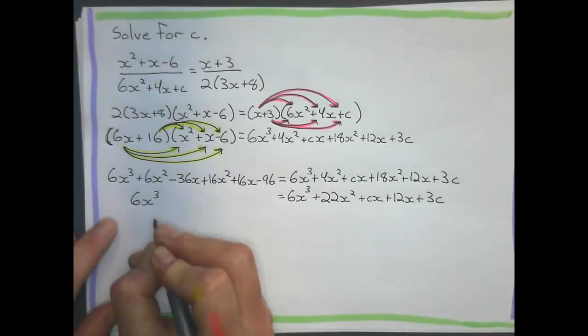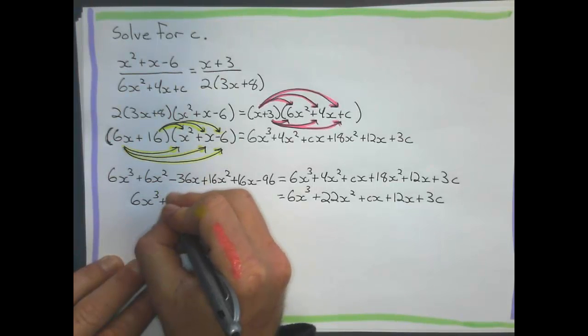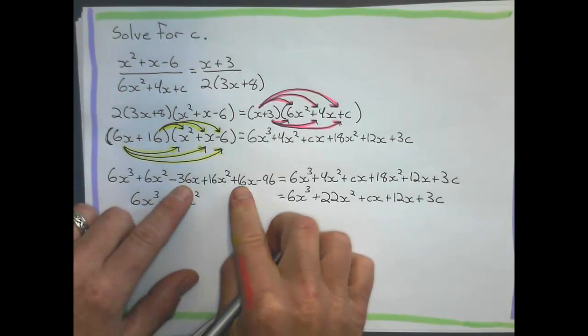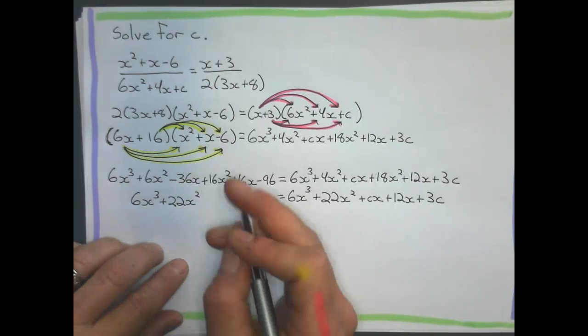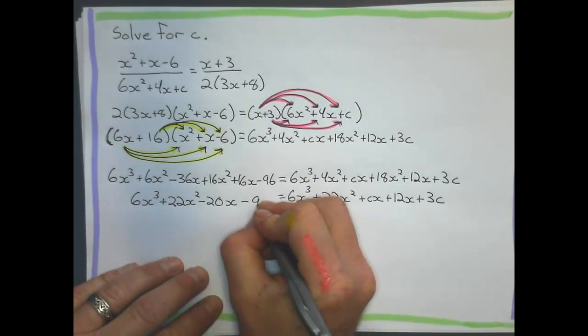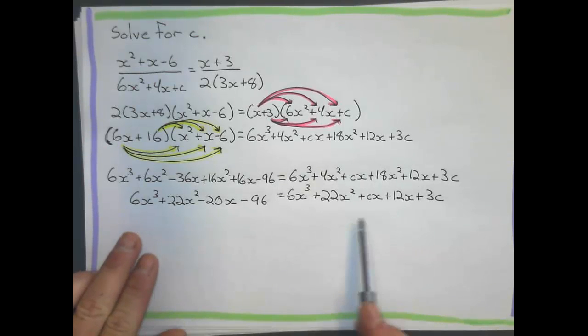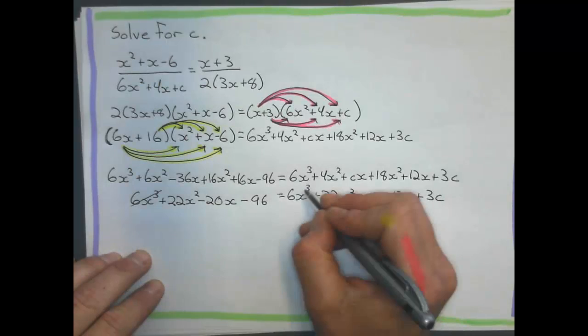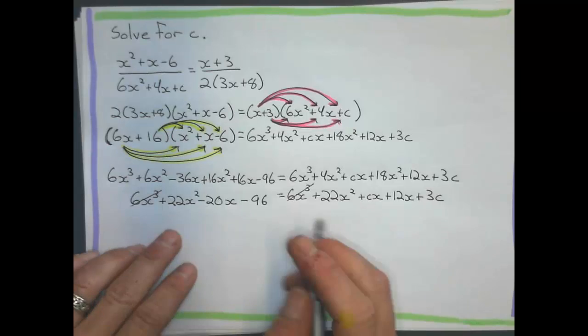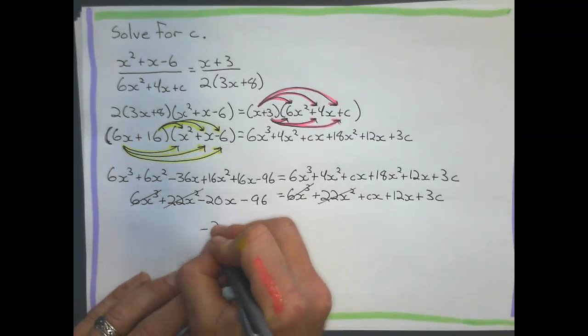So, we get 6x cubed. That doesn't have any like terms. 6x squared and 16x squared gives me positive 22x squared. Negative 36 plus 16, let's not make integer mistakes, that gives me negative 20x. And I think that negative 96 is just all by himself. Now, I look at this expression, this big long expression. And I go, oh, hey, wait. The 6x cubed and 6x cubed. I can subtract that from both sides of the equation. It also has another positive 22x squared and positive 22x squared. Suddenly, it becomes a much easier equation.